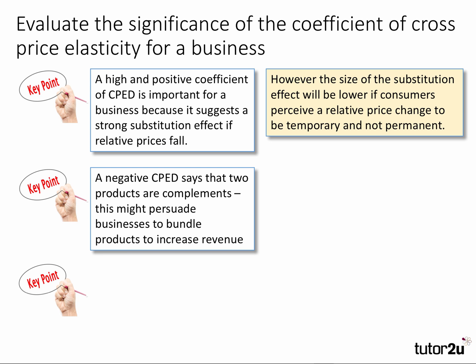The second point relates to two complements. A negative cross price elasticity indicates that two products are complements. This might persuade businesses to bundle products to increase their total revenue — for example, computers with peripherals and software, or cars which come with free insurance. Bundling is an important idea: you reduce the price of one product, put it into the bundle, and people are more likely to buy the bundle, increasing revenue.